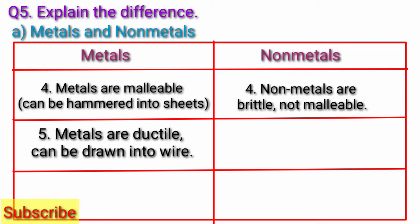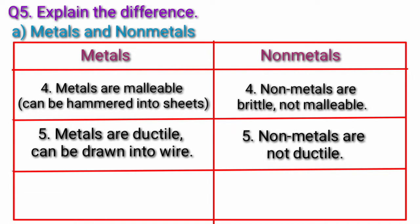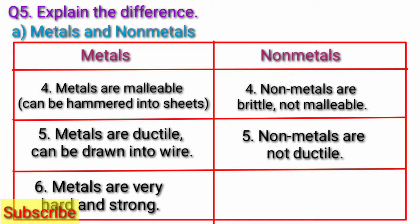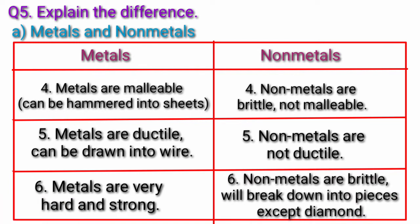5. Metals are ductile and can be drawn into wire; non-metals are not ductile. 6. Metals are very hard and strong; non-metals are brittle and will break down into pieces, except diamond.